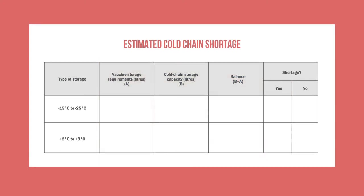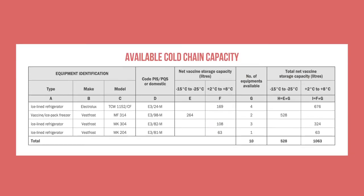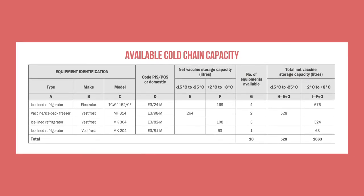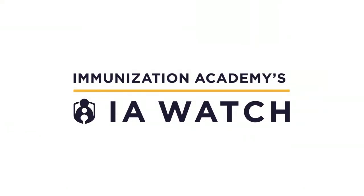For example, let us say you had 1,063 litres of refrigerator and cold room space available, but you need 1,200 litres for an incoming vaccine shipment. When you subtract 1,200 from 1,063, you get a negative number. That means you will need to find additional cold chain storage space to safely store all your vaccines. In this video, we looked at how to calculate cold chain storage capacity and determine if there is sufficient cold chain storage capacity for your vaccine requirements.